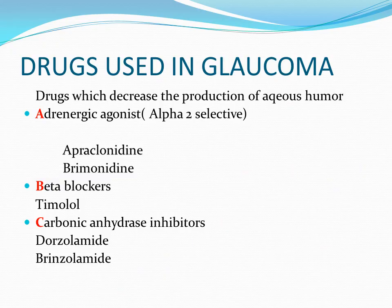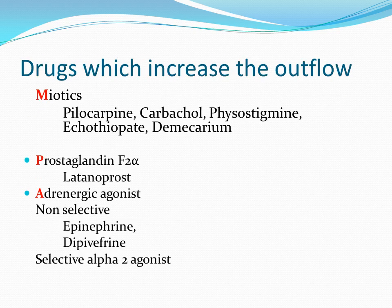We will classify the drugs used in glaucoma according to our aims of therapy. To decrease the production of aqueous humor, we use the ABC drugs: A for adrenergic agonists, which includes apraclonidine and brimonidine; B for beta blockers, most importantly timolol; and C for carbonic anhydrase inhibitors, which include dorzolamide and brinzolamide. Drugs that increase outflow include miotics like pilocarpine, carbachol, physostigmine, ecothiopate, and demecarium, as well as prostaglandin analogs, especially PGF2-alpha such as latanoprost.